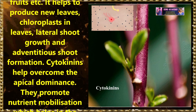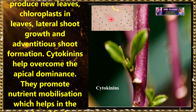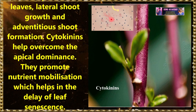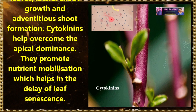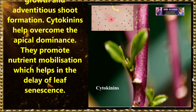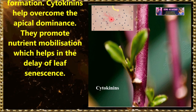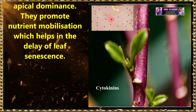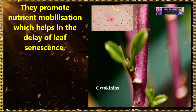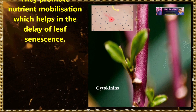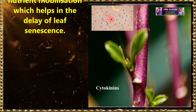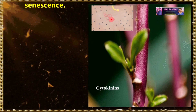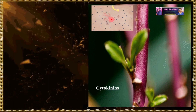It helps to produce new leaves, chloroplasts in leaves, lateral shoot growth, and adventitious shoot formation. Cytokinins help overcome apical dominance, promote nutrient mobilization, which helps in the delay of leaf senescence.